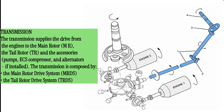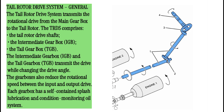Transmission. The transmission supplies the drive from the engines to the main rotor (MR), the tail rotor (TR), and the accessories — pumps, ECS compressor, and alternators. If installed, the transmission is composed of the main rotor drive system (MRDS) and the tail rotor drive system (TRDS).